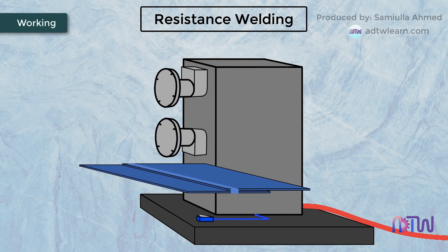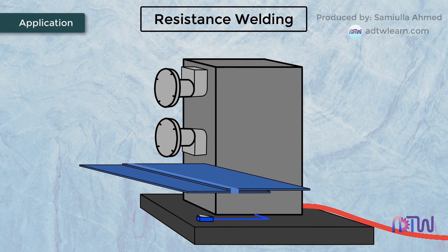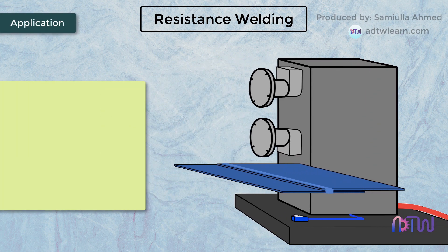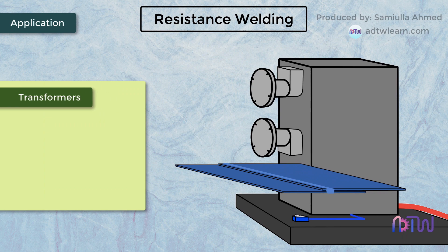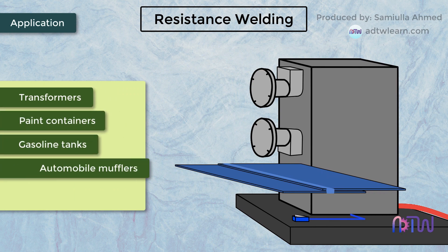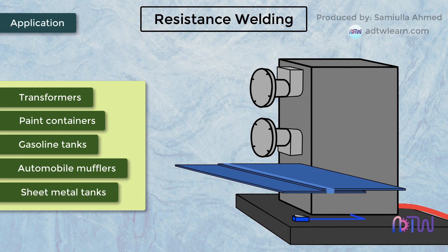A nugget is a weld between the two workpiece interfaces. Applications of seam welding: welding of transformers, paint containers, welding of gasoline tanks, automobile mufflers, and welding of sheet metal tanks.